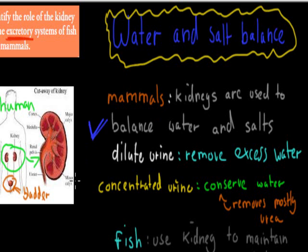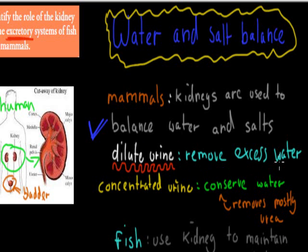I wrote dilute urine in white because dilute refers to there not being too much urea compared to water — so it has a lot more water. If you have dilute urine, your urine will actually be white, because there's so much water in there. The reason why we have dilute urine is because we might have drunk too much water and need to get rid of that excess. Too much water and too little water can both be bad, so by producing dilute urine we're removing the excess — that's why it's white, representing water being removed.